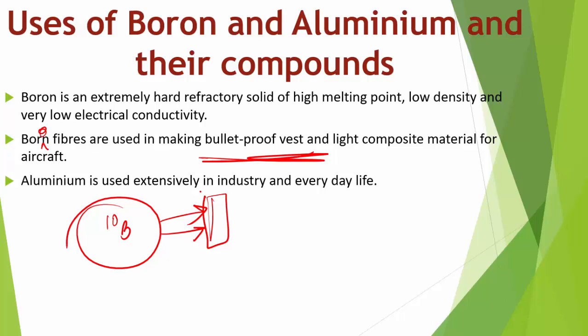The main industrial application of borax and boric acid is in the manufacture of heat-resistant glasses such as Pyrex, as well as glass wool and fiber glass. Borax is also used as flux for soldering metals, for heat-, scratch-, and stain-resistant glazed coatings of earthenwares, and as a constituent of medicinal soaps. An aqueous solution of orthoboric acid is used as a mild antiseptic.